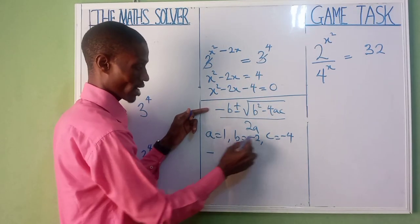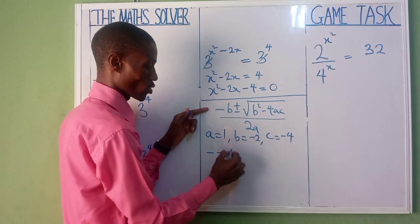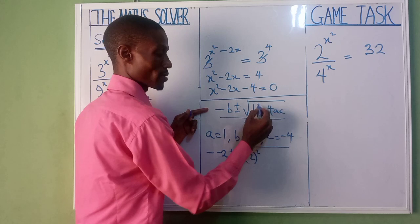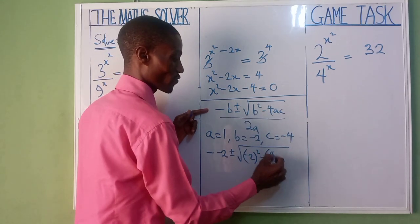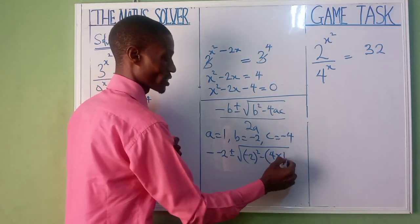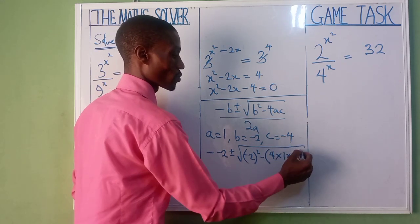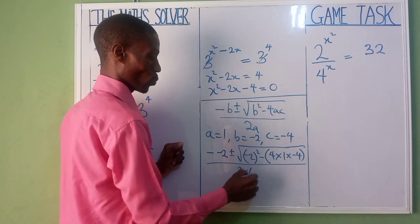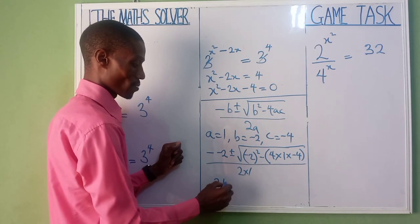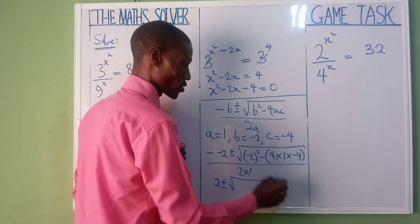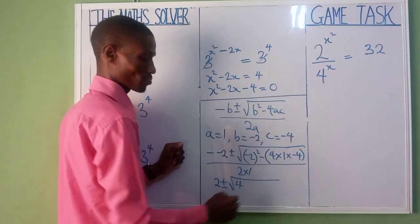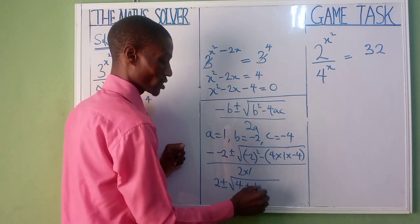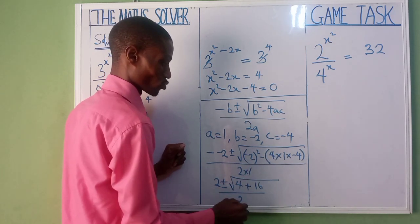We have minus our b is minus 2, plus or minus square root of our b, minus 2 squared, minus, open your bracket, 4 times our a is 1, our c is minus 4, divided by 2a, 2 times 1. So minus minus is plus, that is 2 plus or minus square root. Minus 2 squared is 4, minus times minus is plus, 4 times 1 times 4, that is 16, over 2.